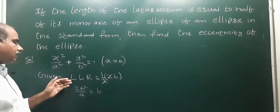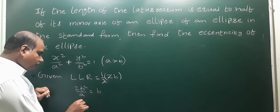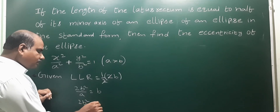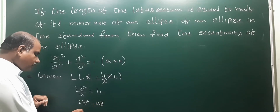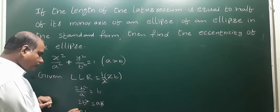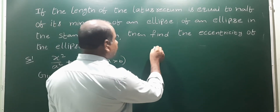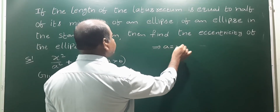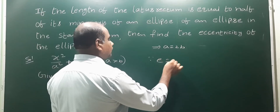So LLR is equal to 2b² by a, and the half of minor axis is b. So 2b² is equal to ab. b cancels, so 2b is equal to a. Therefore a is equal to 2b — we get that implies a is equal to 2b.